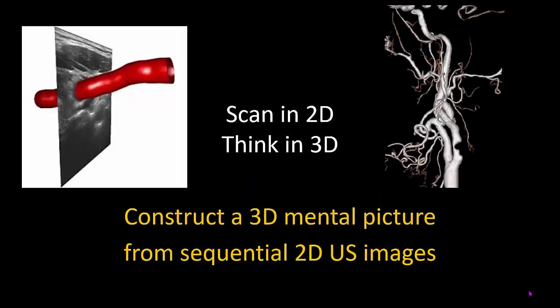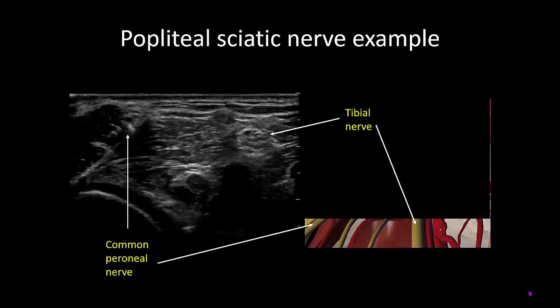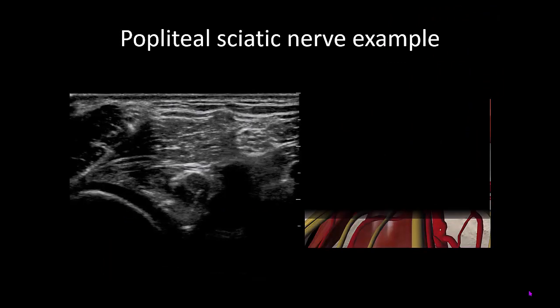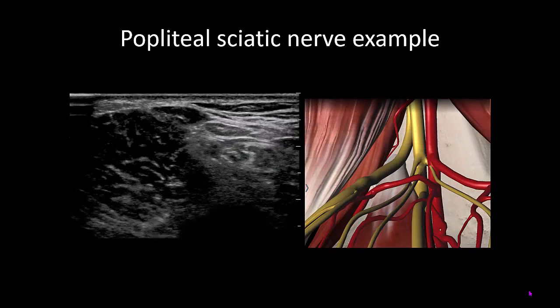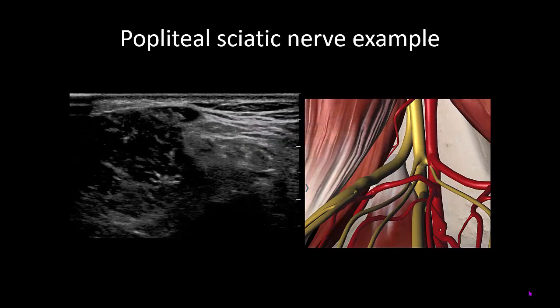Another thing to realize is that when scanning, we are obtaining a sequence of 2D images, and we should be using this to construct a 3D anatomical image in our mind. Again, this is where detailed anatomical knowledge comes in very useful. Using the popliteal sciatic nerve as an example, as we scan along its course, we should be able to mentally visualize the common peroneal nerve as it swoops in from superficial to deep to join the tibial nerve at the bifurcation of the main trunk.